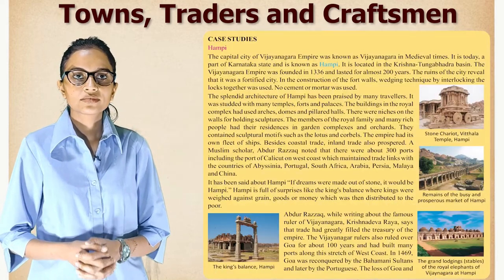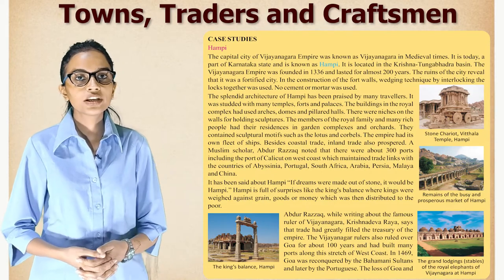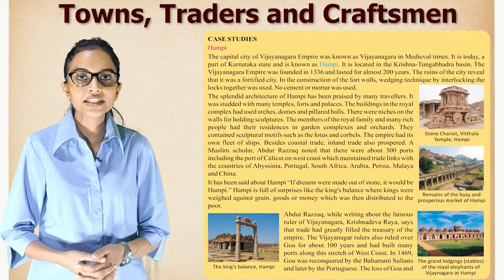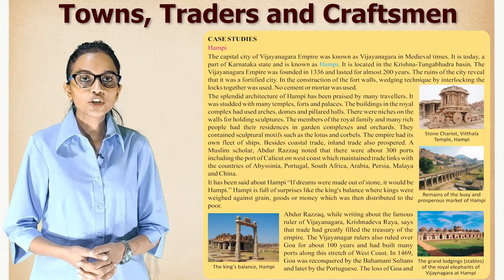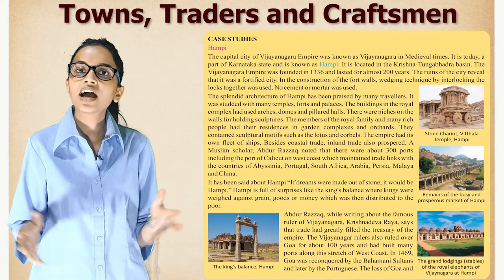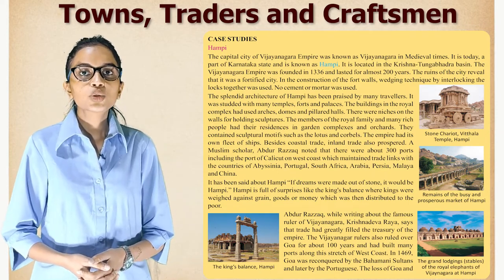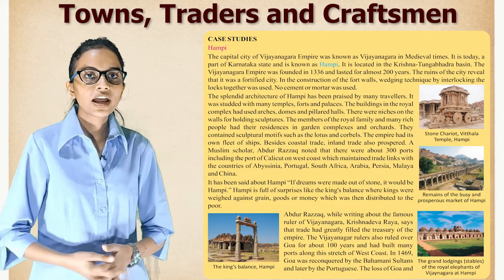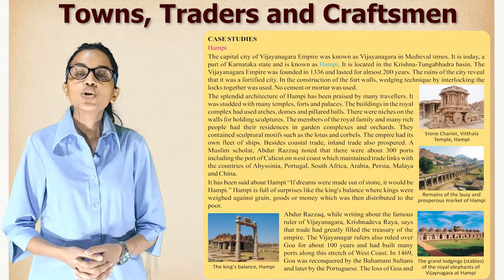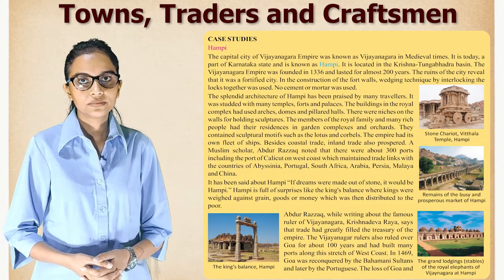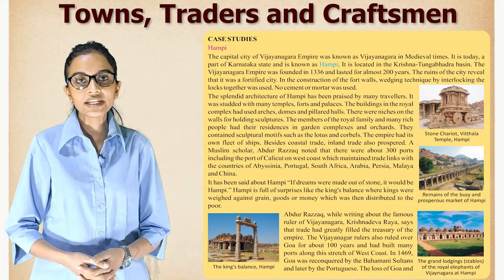Case Study — Hampi: The capital city of the Vijayanagara Empire was known as Vijayanagara in medieval times. Today it is a part of Karnataka state and is known as Hampi. It is located in the Krishna-Tungabhadra basin. The Vijayanagara Empire was founded in 1336 and lasted for almost 200 years. The ruins of the city reveal that it was a fortified city.